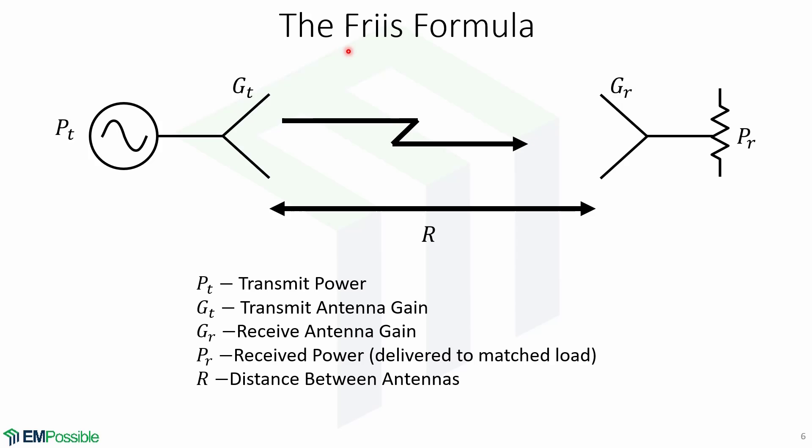Now let's look at the Friis formula. A general radio system link is shown here, where the transmit power is PT, the transmit antenna gain is GT, the receive antenna gain is GR, and the received power delivered to a matched load is PR. The transmit and receive antennas are separated by a distance R.